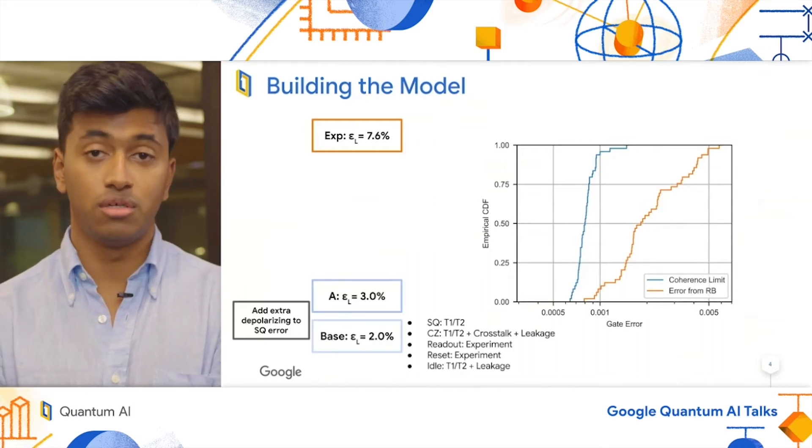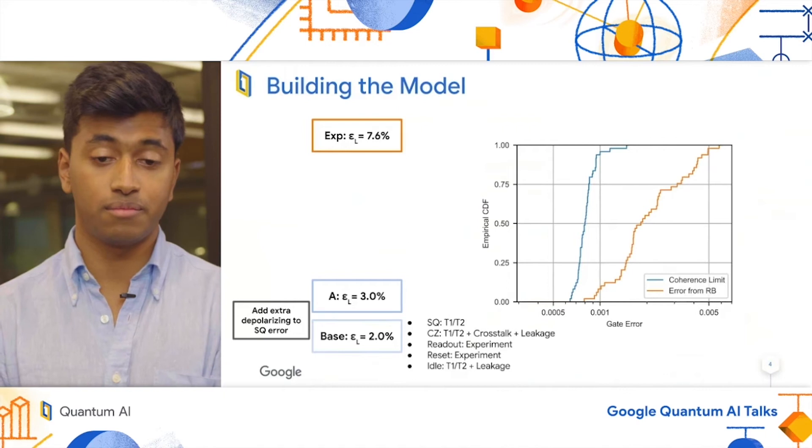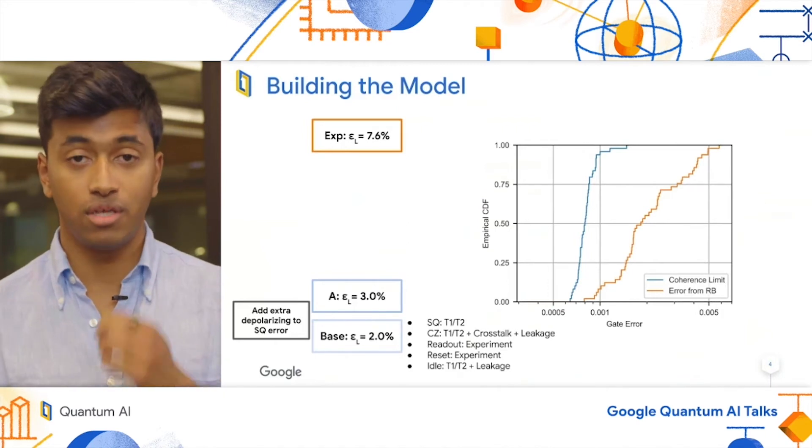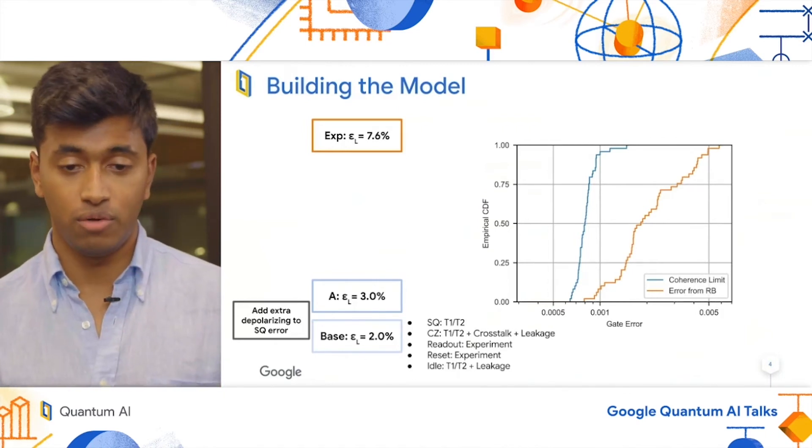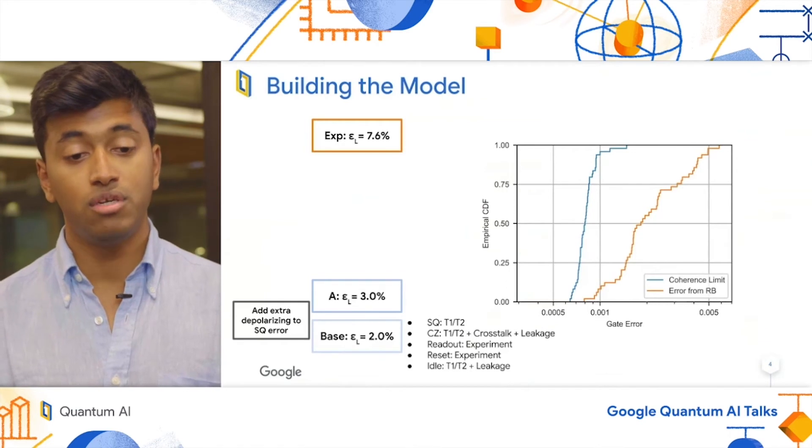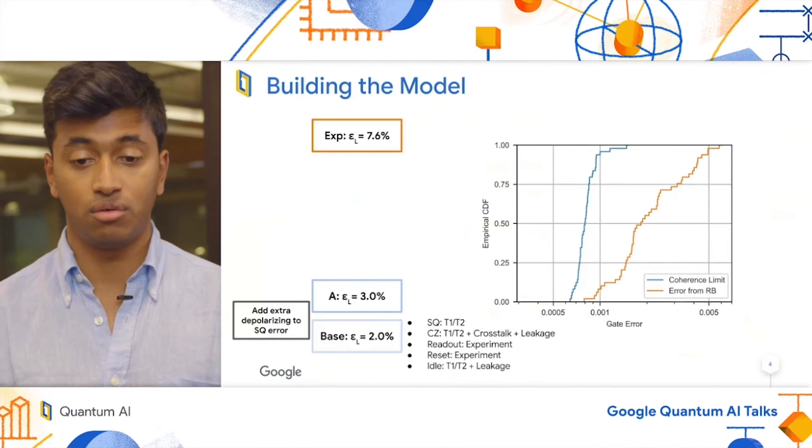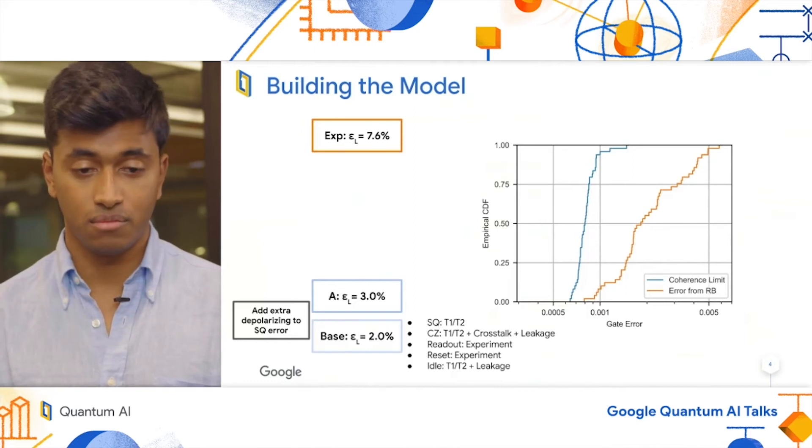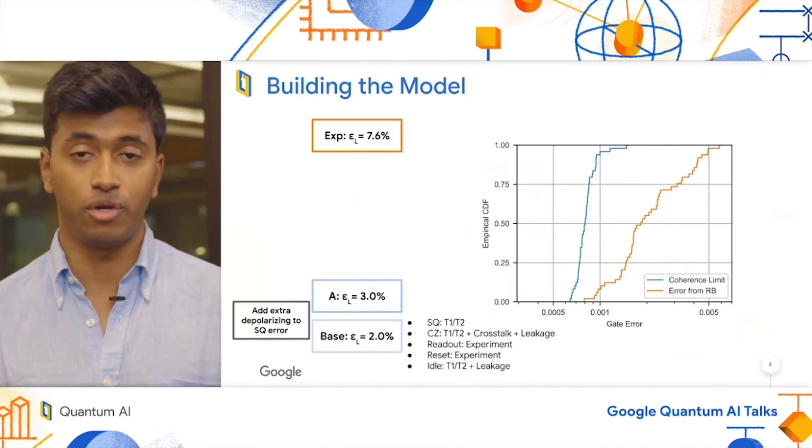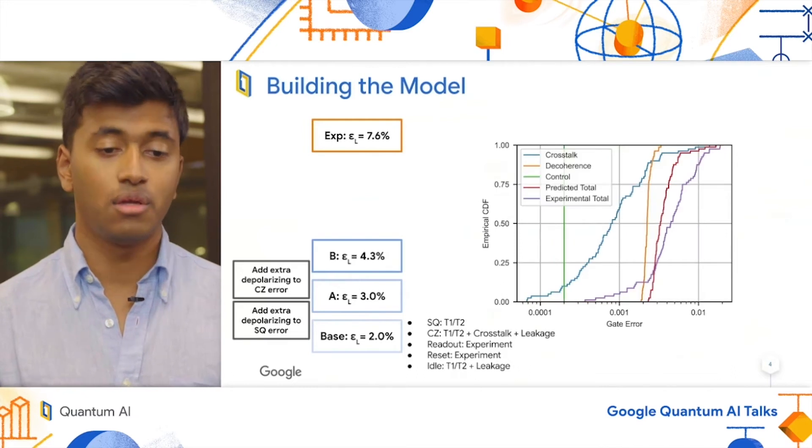are far larger than the coherence limit to predict. This tells us there is some excess error present in the system. What we do is we add extra depolarizing error to our single qubit gates in order to match this randomized benchmarking experiment. This brings our error rate up to 3%.